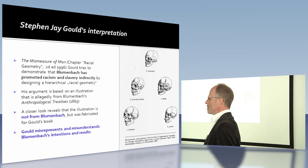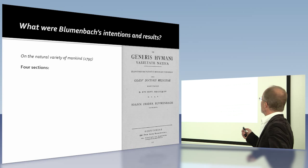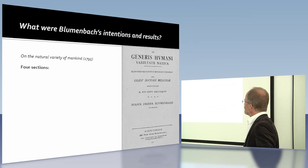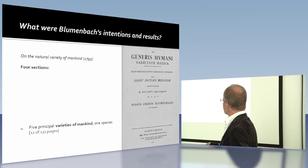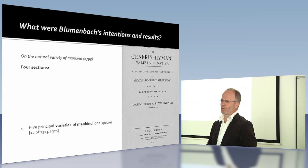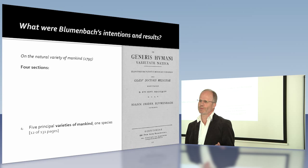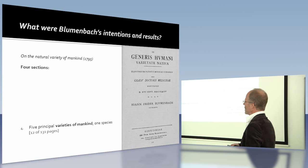What were Blumenbach's intentions and results? To find out, I think you have to go back to his book. This is the book Gould refers to — in the English translation, On the Natural Variety of Mankind, the third edition. The book actually has four sections. The last section treats the question of the varieties of mankind. It's 12 out of 131 pages, so it's a very minor part of the whole book.